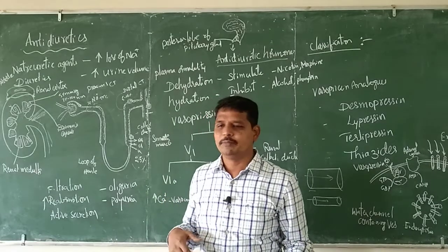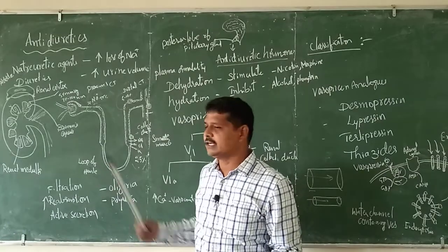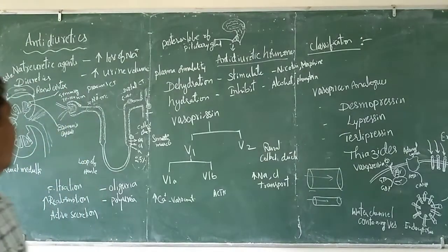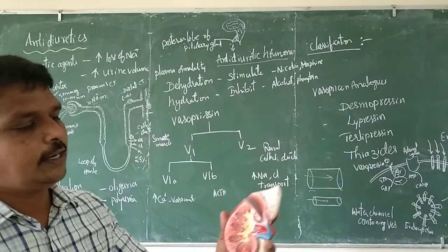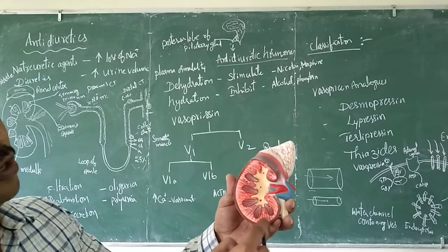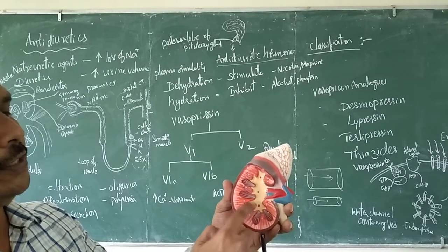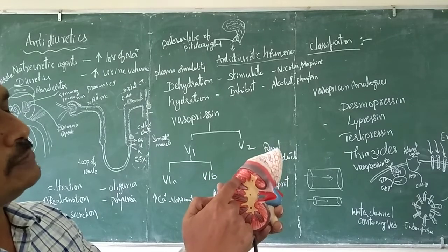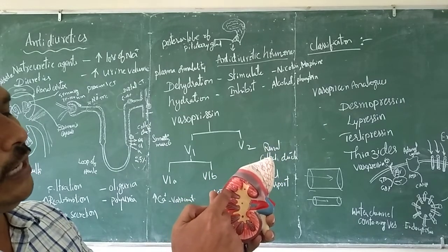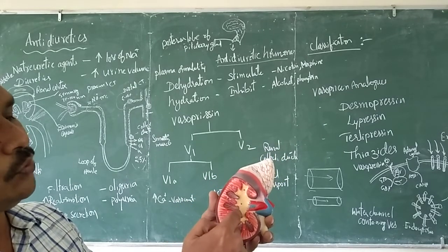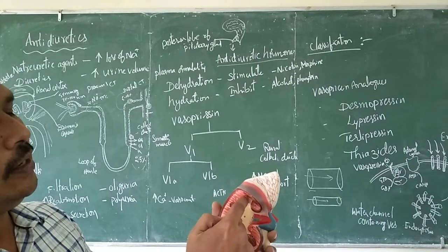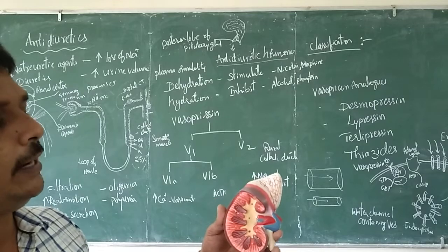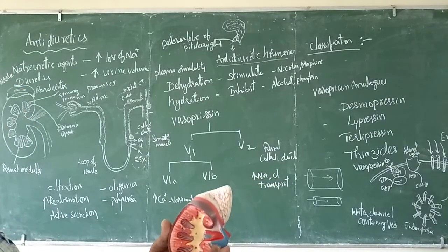Before that, we will briefly discuss about the anatomy of the kidney. The kidney has a renal cortex region and a renal medulla region. In the renal cortex there are Bowman's capsules — the nephron. In the renal medulla there are collecting ducts, which further secrete urine.